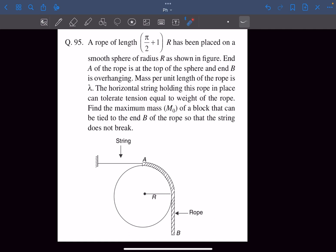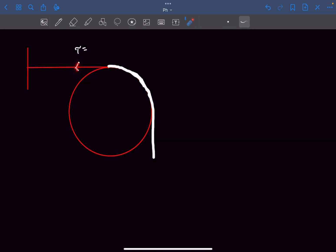Let's begin. It was given that the maximum tension the string can handle is the weight of the rope. The weight of the rope is its mass, which is lambda times its length, which was given to be (π/2 + 1) times R times g. The tension at this point is T.